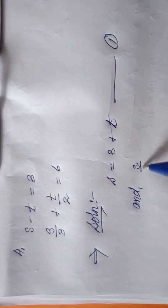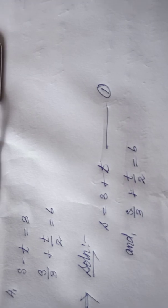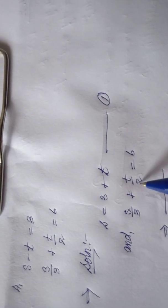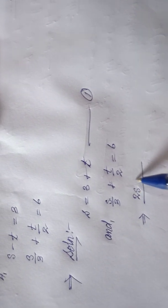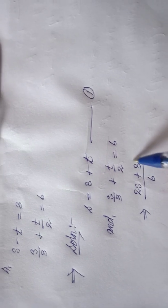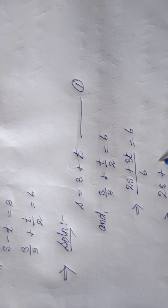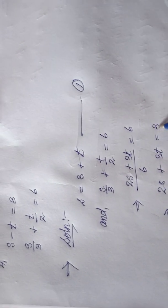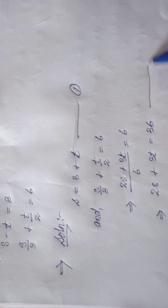For equation two I have s by three plus d by two equal to six — it is in fraction form, so I take the LCM of three and two, which is six. Multiplying through: two times s is 2s, and three times d is 3d, equal to six times six. So we have 2s plus 3d equal to 36 — this will be equation two.